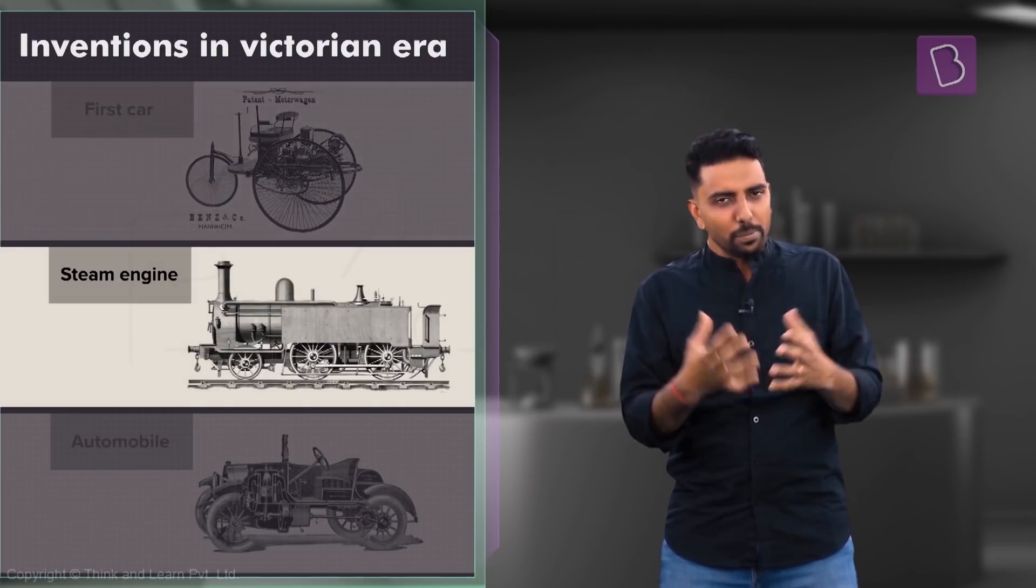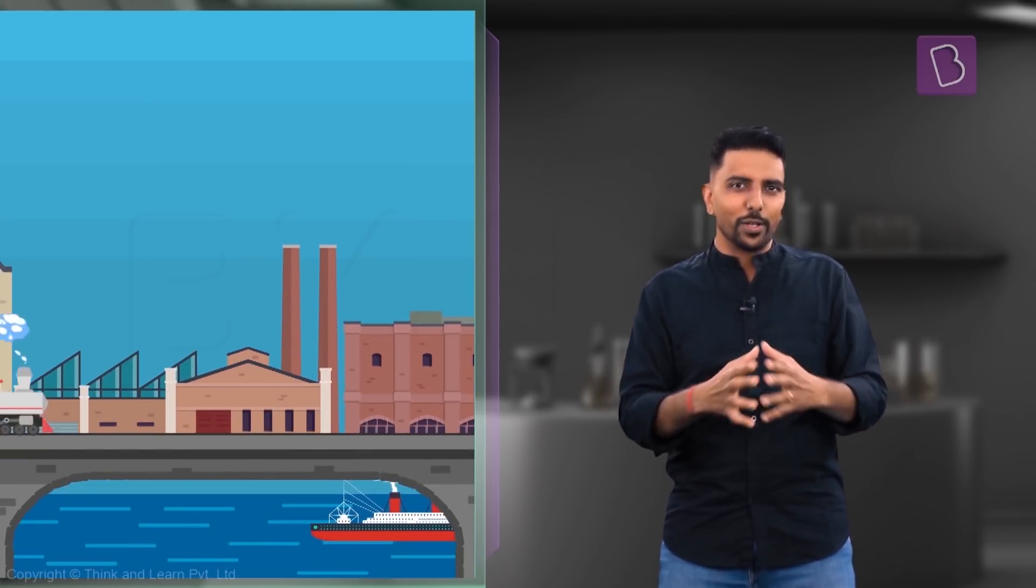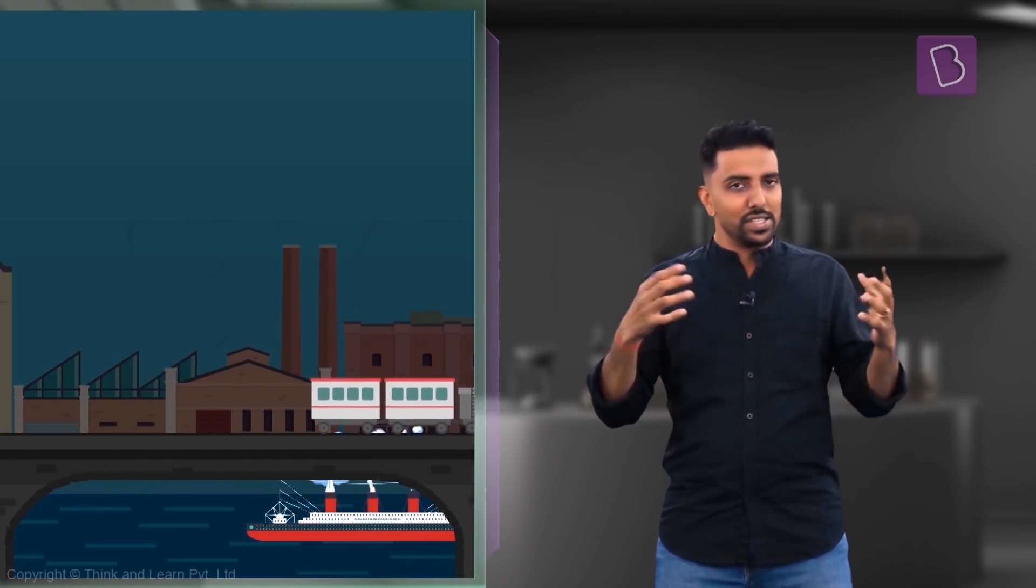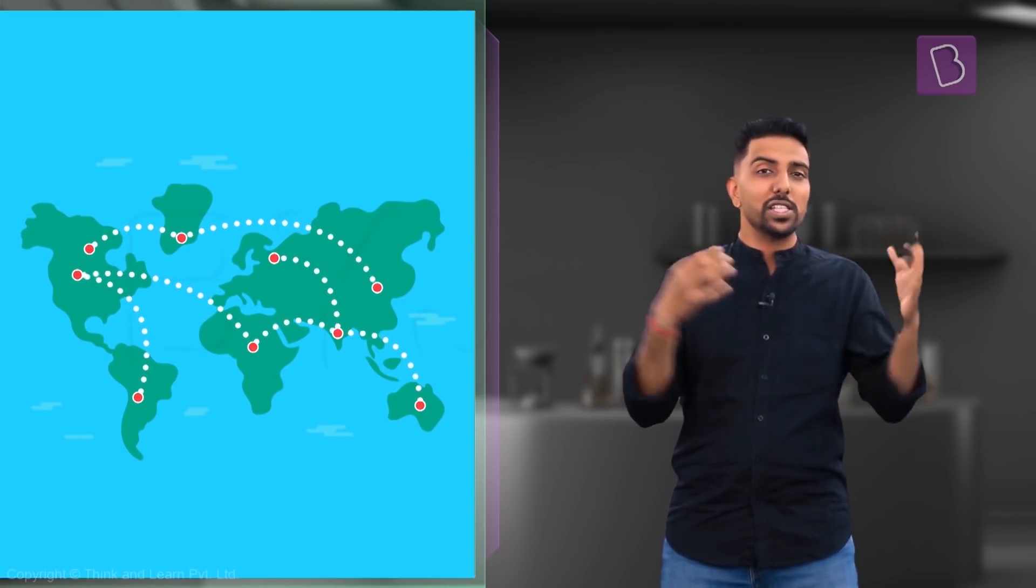With improved steam engines and automobiles the industrial revolution was driven by the growth of railways and steamships. Suddenly the world became a much smaller place.